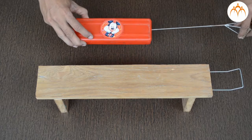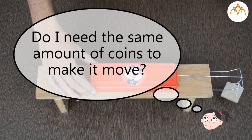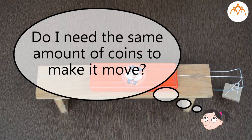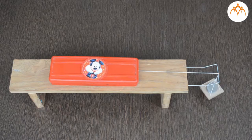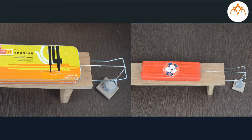If instead of this compass box I use identical plastic box, do I need the same amount of coins to make it move? Let us try. Fewer coins were required to move the plastic box. The amount of friction depends on the materials from which the two surfaces are made.